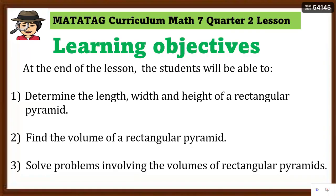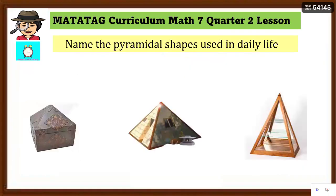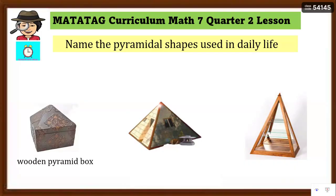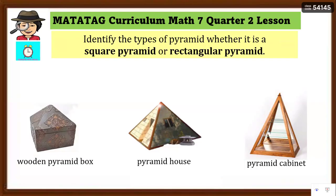Let's activate your prior knowledge. You are going to name the pyramidal shapes found in our daily life. The first picture — the term for that is 'wooden pyramid box.' Next is 'pyramid house.' And the last one is 'pyramid cabinet.'